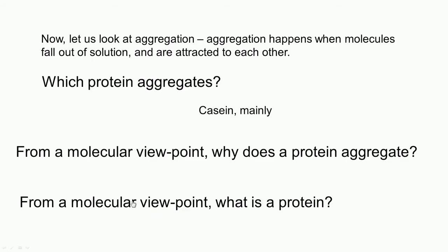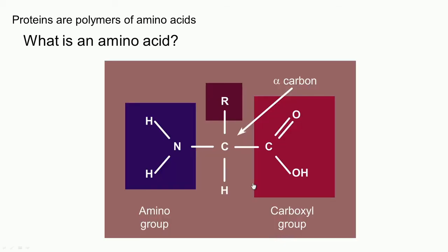In the last lecture, we left off at the question of what a protein is from a molecular viewpoint. Proteins are polymers of something called amino acids — that is what proteins are. And what is an amino acid? It is very simple. You have a central carbon atom here, called the alpha carbon atom.